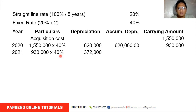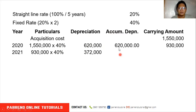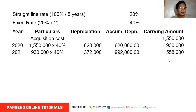For 2021, we use the new carrying amount of $930,000 times our fixed rate of 40%. Our depreciation is $372,000. The double declining balance is also an accelerated method, where higher depreciation expenses are charged in the early part of the asset's useful life. Our accumulated depreciation for 2021 is $620,000 plus $372,000 = $992,000, and the new carrying amount is $558,000.